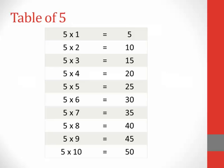Table of 5. 5 1s are 5, 5 2s are 10, 5 3s are 15, 5 4s are 20, 5 5s are 25, 5 6s are 30, 5 7s are 35, 5 8s are 40, 5 9s are 45, 5 10s are 50.